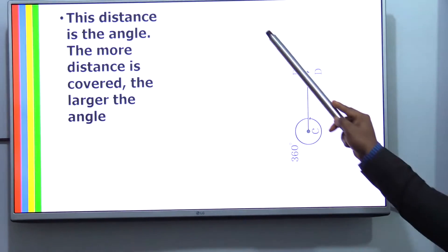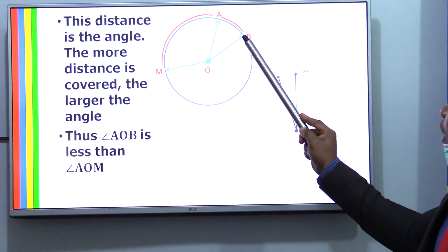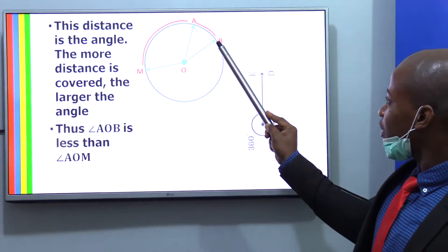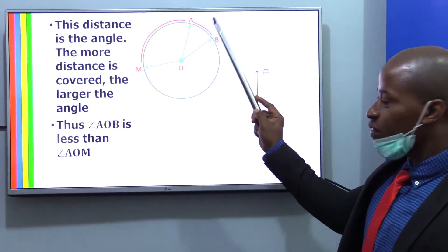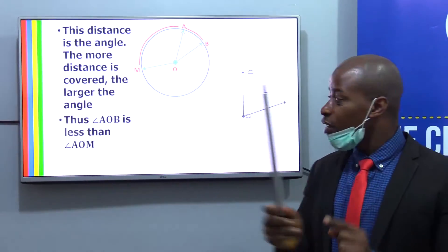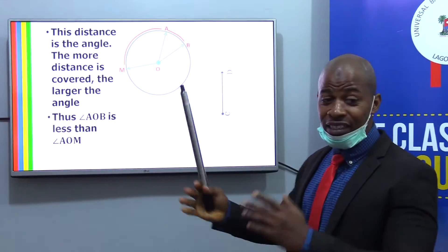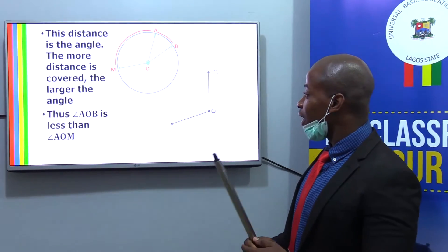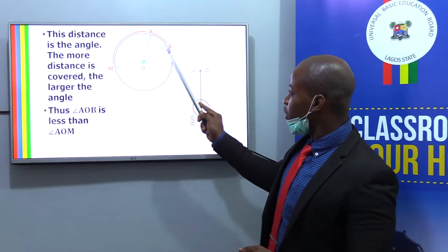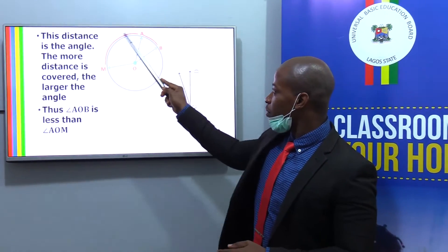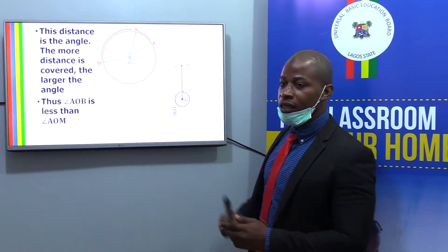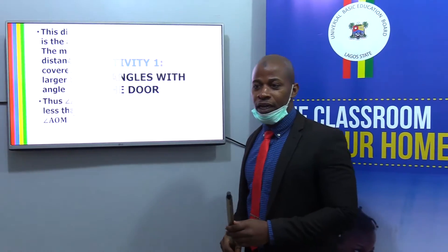In this diagram, you will see that B has moved to A, but A has moved to M. The distance from B to A is a very small distance, but from A going to M, that is a larger distance, and that means a larger angle. That is why angle AOB is smaller than angle AOM. The distance is larger than this one.